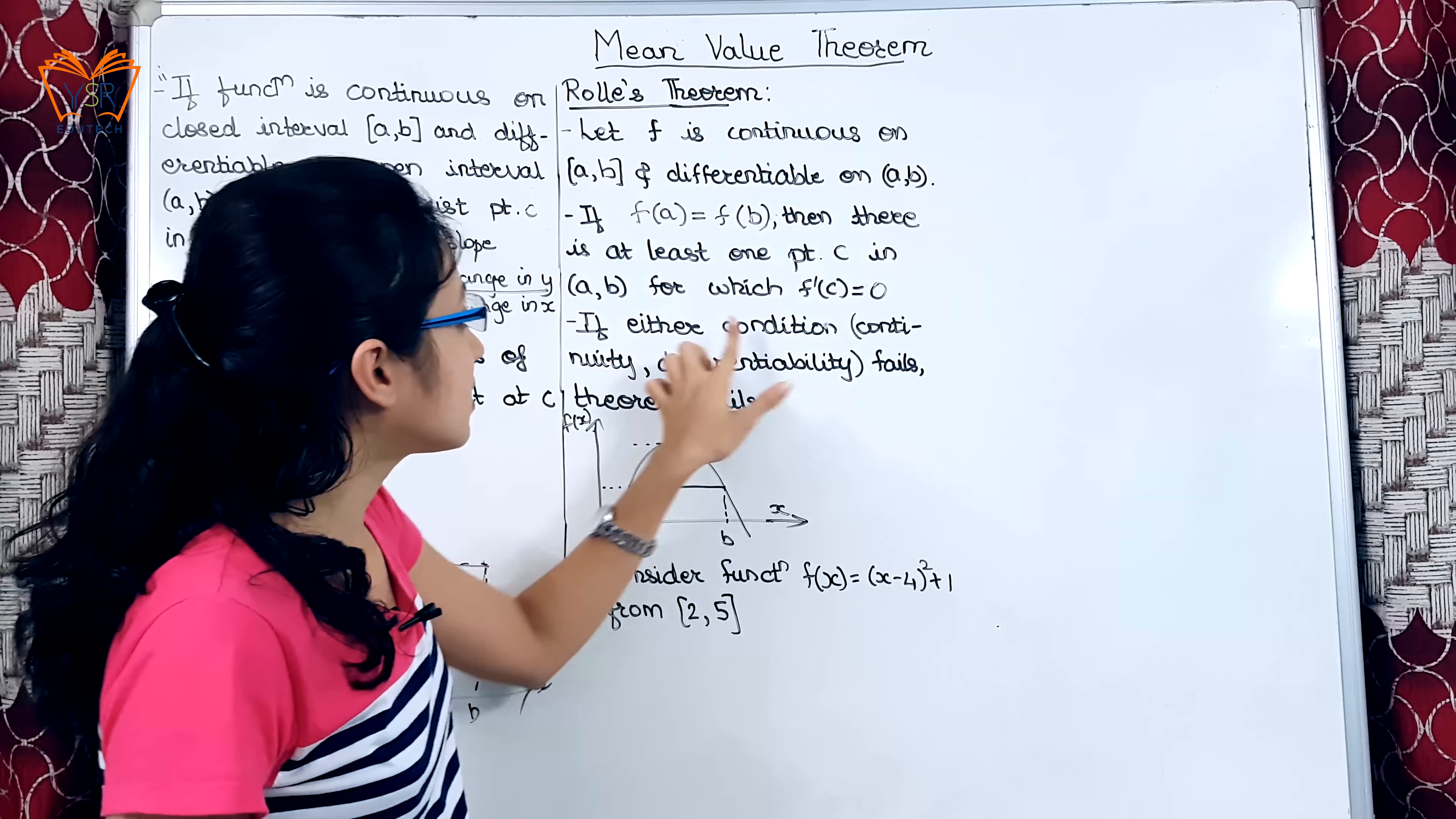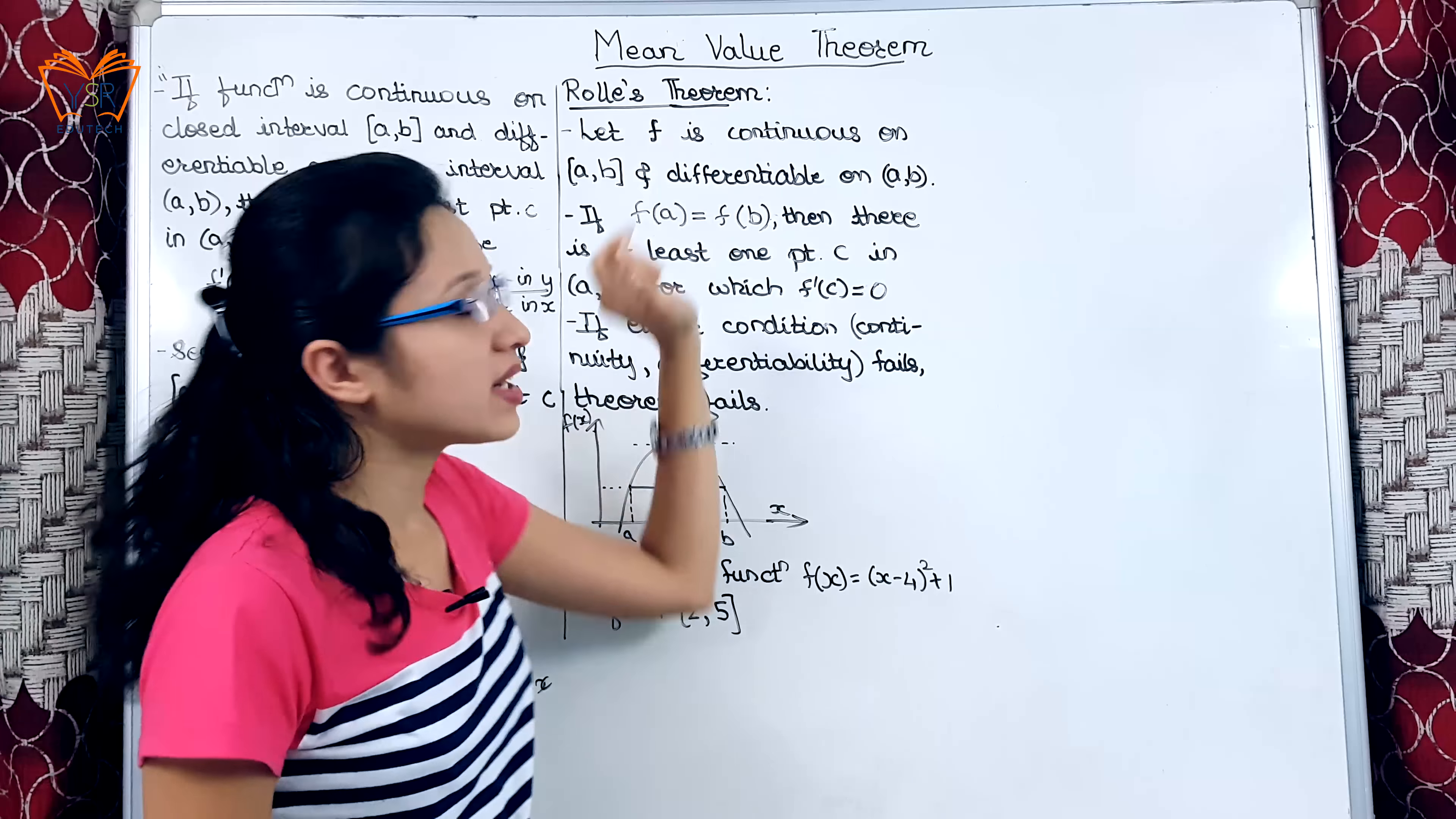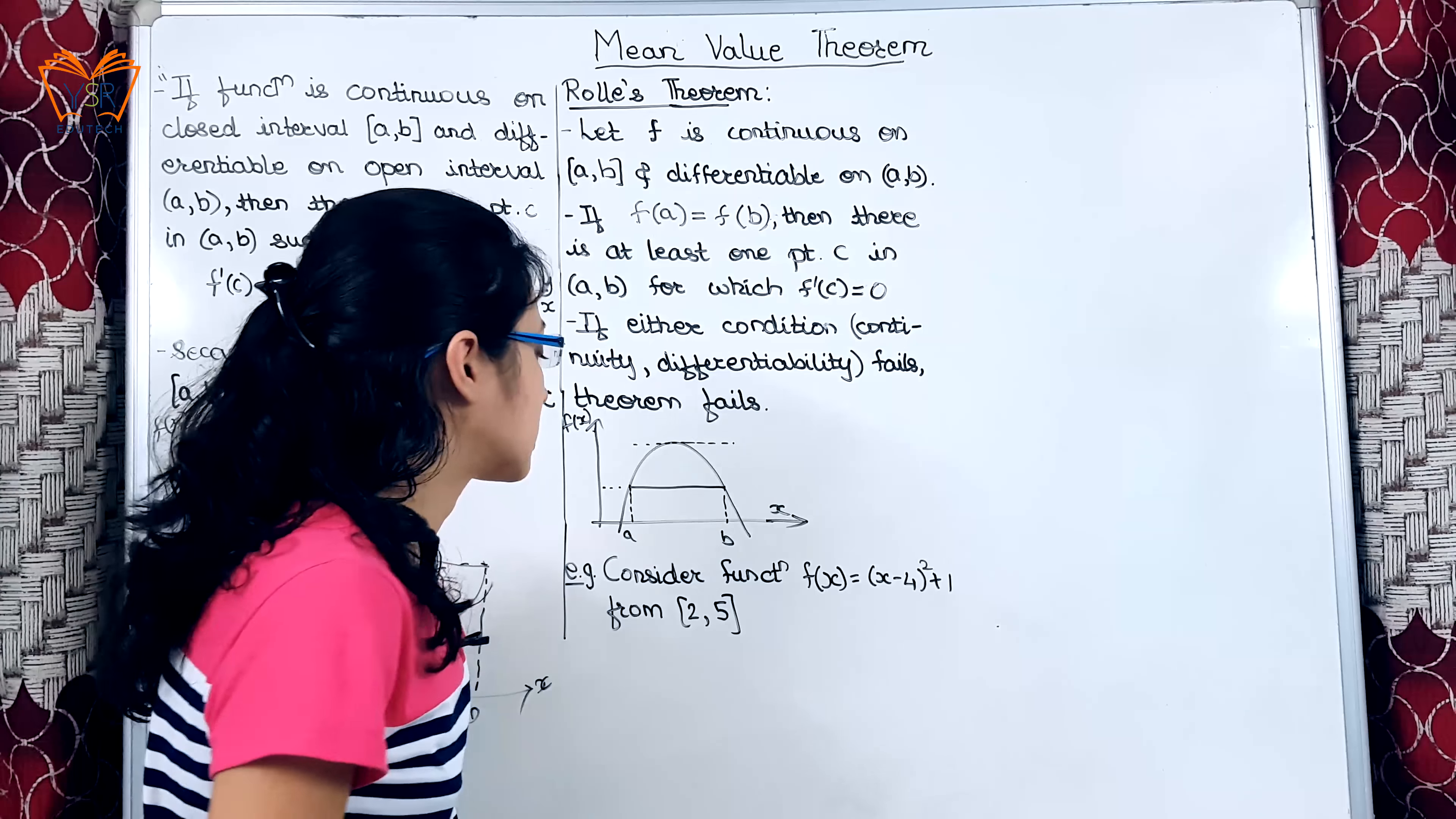It says if either condition continuity or differentiability fails, the theorem will fail. This is self-explanatory because in the statement of mean value theorem and in the statement of Rolle's theorem, they have mentioned that the function is supposed to be continuous and differentiable. If it is not continuous and differentiable theorem will fail and vice versa.